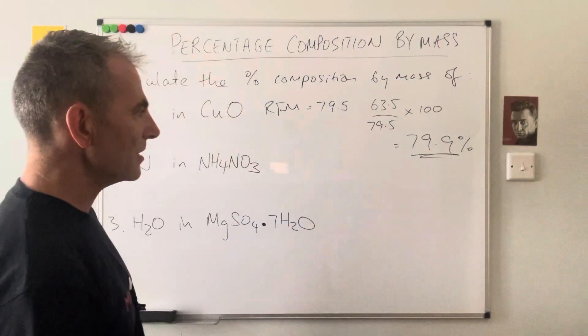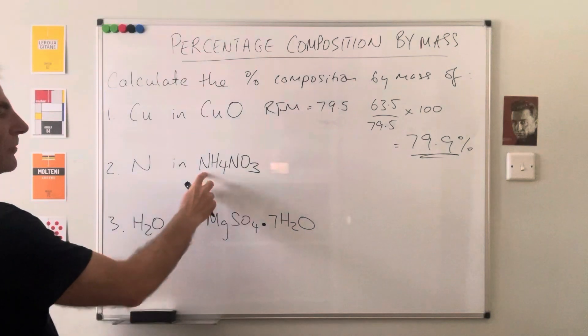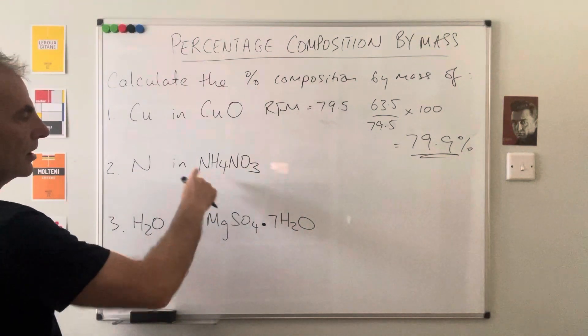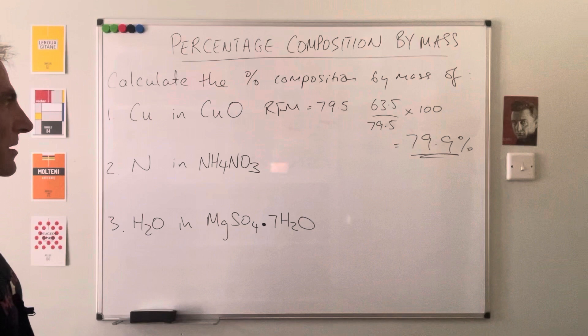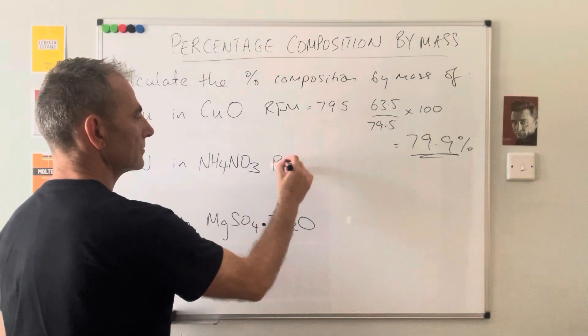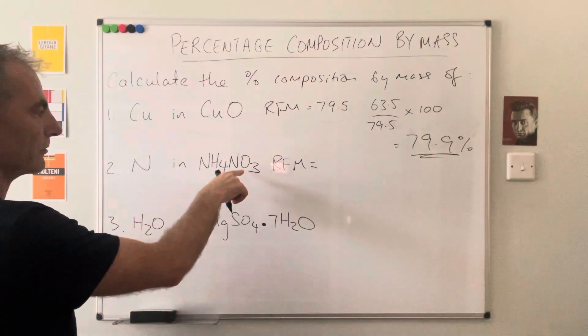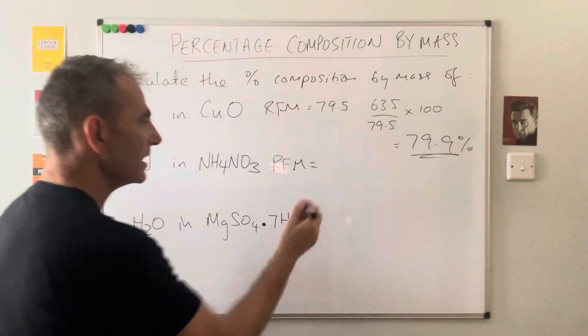The second one's a little bit trickier because we've got two nitrogens in ammonium nitrate. Method's exactly the same. So first thing I'm going to do is work out the relative formula mass. We've got two nitrogens, four hydrogens, and three oxygens, so that comes out at 80.